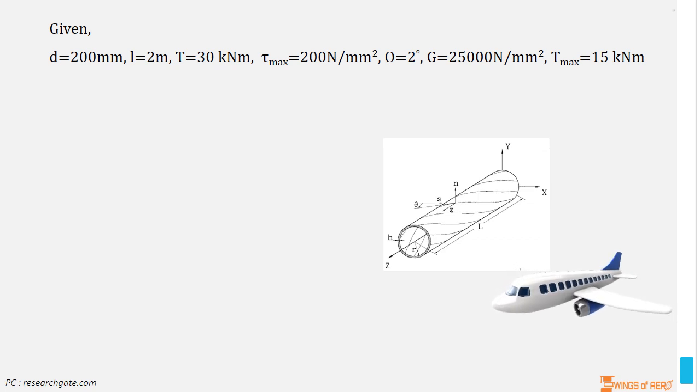We consider a thin wall circular section beam. Let me write the given data. Diameter of the given beam, D is equal to 200 mm. Length of the beam, L is equal to 2 m. Applied torque, T is equal to 30 kNm and maximum shear stress, τ_max is equal to 200 N/mm² and maximum angle of twist, θ is equal to 2 degree and shear modulus, G is equal to 25,000 N/mm² and maximum torque, T_max is equal to 15 kNm.